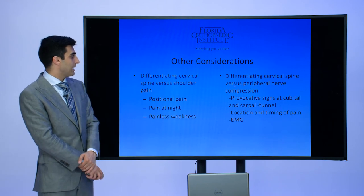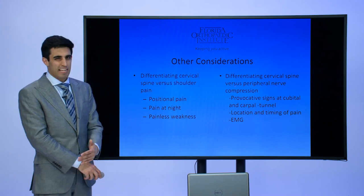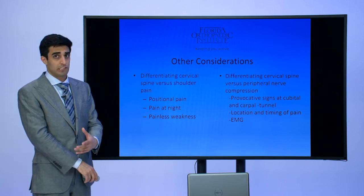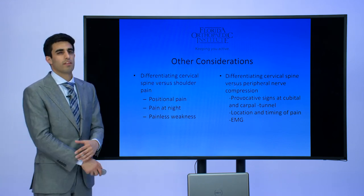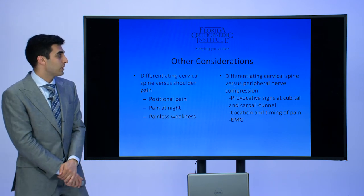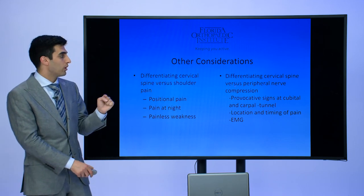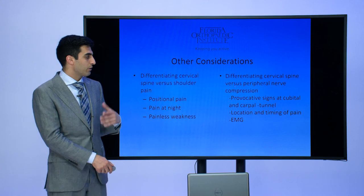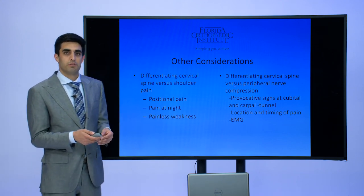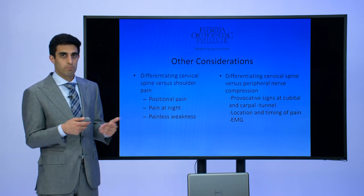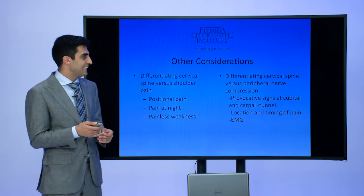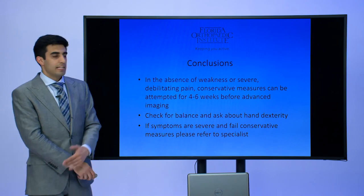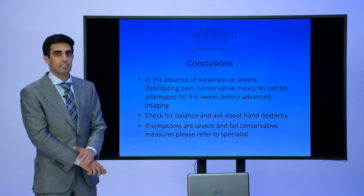Other considerations include differentiating cervical spine versus shoulder pain — positional pain, pain at night, or painless weakness can help differentiate cervical spine issues versus just shoulder pain. Another important consideration from a diagnostic standpoint is differentiating a cervical spine cause of nerve compression from a peripheral nerve compression. These mostly have to do with provocative signs at the cubital and carpal tunnels, location and timing of pain, and also a test called an EMG, which uses little electrodes on different areas of your arm or legs to look and see if there is compression of a nerve outside of the spinal cord which could be causing a patient's discomfort.